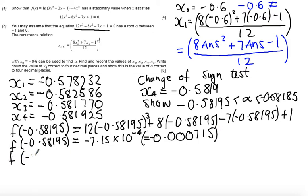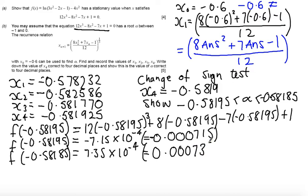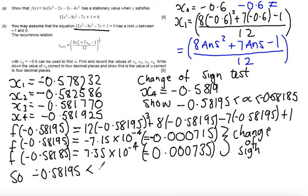If I do f of minus 0.58185 then what's going to happen when we plug this into our formula, what we get is 7.35 times 10 to the minus 4 which is 0.000735. But actually all that we're interested in is that there is a change of sign, so we know that minus 0.58195 is less than alpha is less than minus 0.58185 and therefore alpha equals minus 0.5819 to four decimal places.